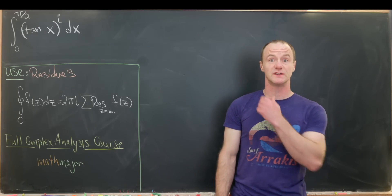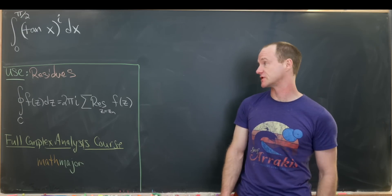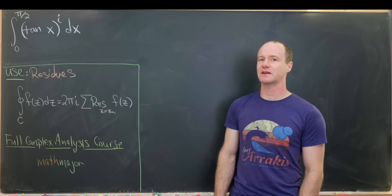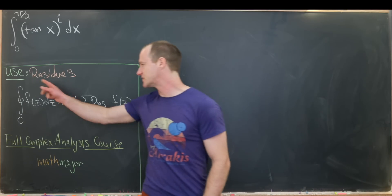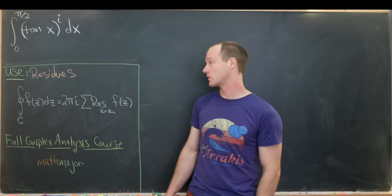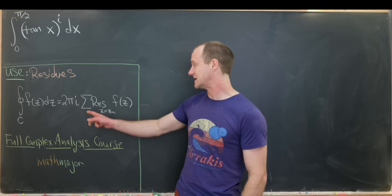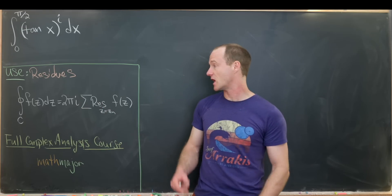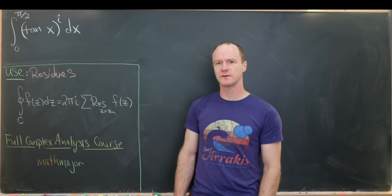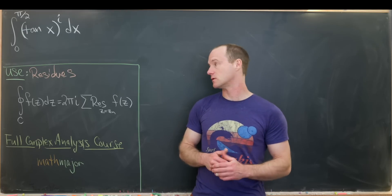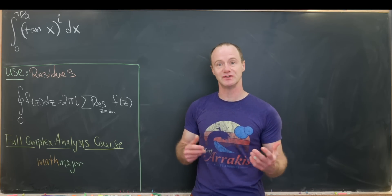Today we have a nice integral to solve using complex analytic methods — specifically the residue theorem. That says if you take an integral around some closed curve in the complex plane of a function f, you get 2πi times the sum of the residues of that function within the region bounded by this closed curve. This sounds technical, but the basis isn't too hard to understand, though we won't go over it in this video — we'll just do the calculation.